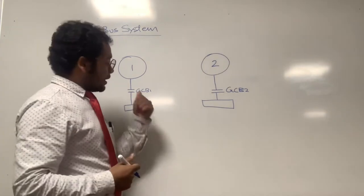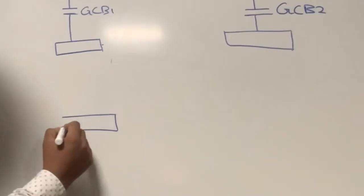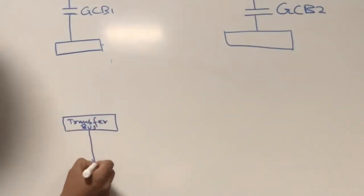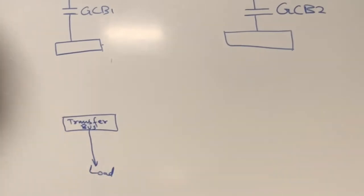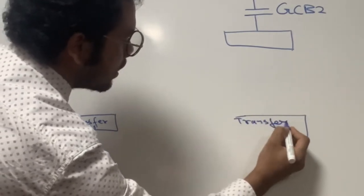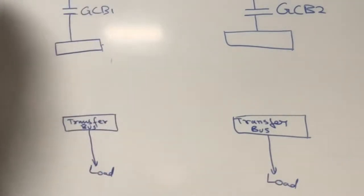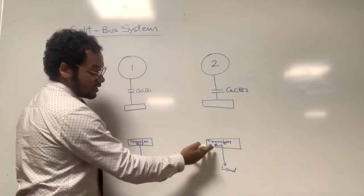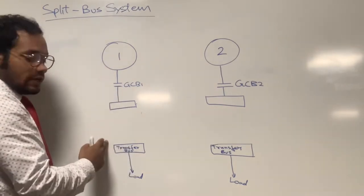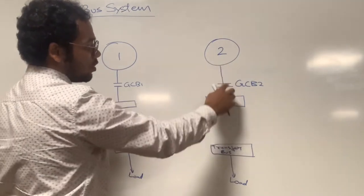For distributing the electrical supply to the loads, we have a transfer bus bar on each side. The transfer bus bar gets its supply from its own side system — the left transfer bus gets supply from the number one side, and the right transfer bus gets supply from the number two side. Each transfer bus then distributes the supply to its respective loads.